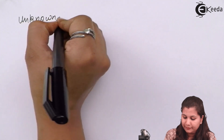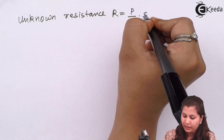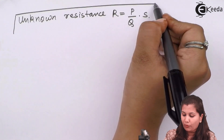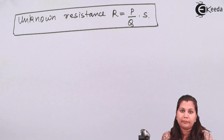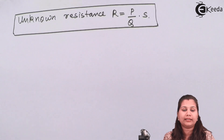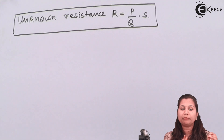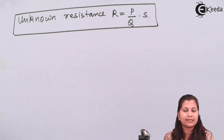When the bridge is balanced, the value of the unknown resistance is given by the same formula as the Wheatstone bridge: R = (P/Q) × S. This is how the value of an unknown high resistance can be measured with the Megaohm method. The Megaohm method is similar to the Wheatstone bridge, but with a three-terminal high resistance in one arm. The two main terminals and the guard terminal is connected to the meeting point of P and Q, and the balance equation gives the unknown resistance.